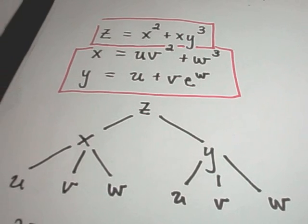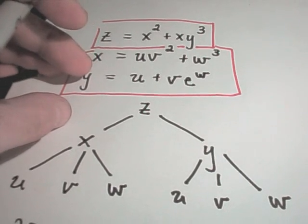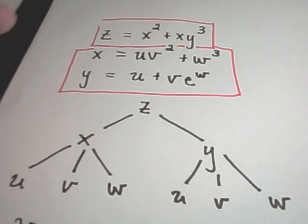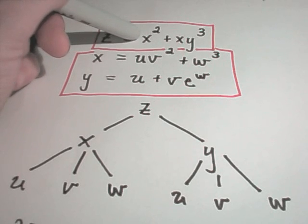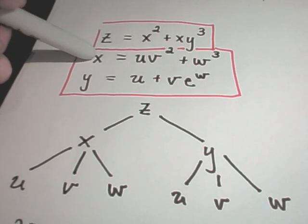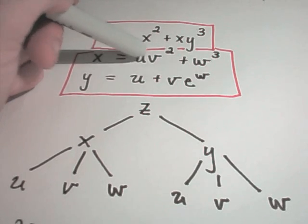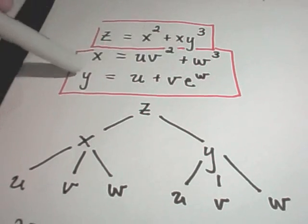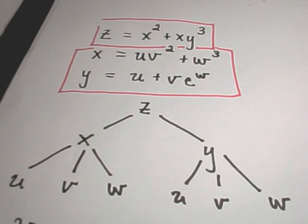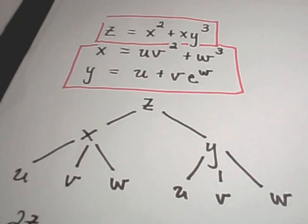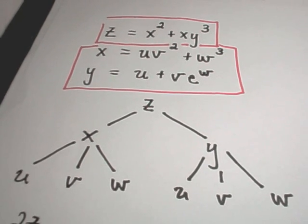So again, what we're doing is the chain rule. Here, z is a function of x and y, and in turn x is a function of u, v, and w, and y is a function of u, v, and w. You'll definitely want to see the first part of this to make some sense out of it, but just to cut to the chase here.